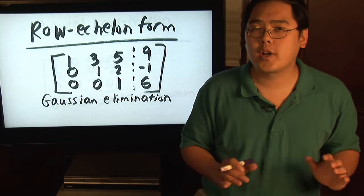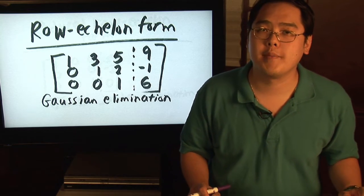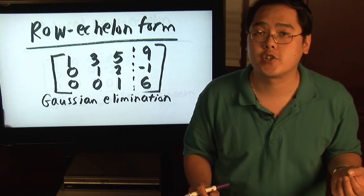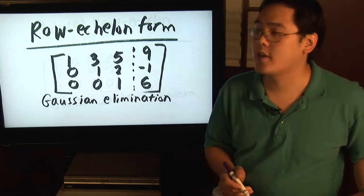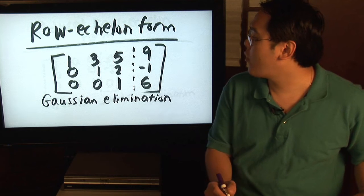Now, one of the more common forms of solving a matrix, the form that you want the matrix to be in in order for you to figure out the answers, is that of row echelon form. Here's an example as to what row echelon form looks like.